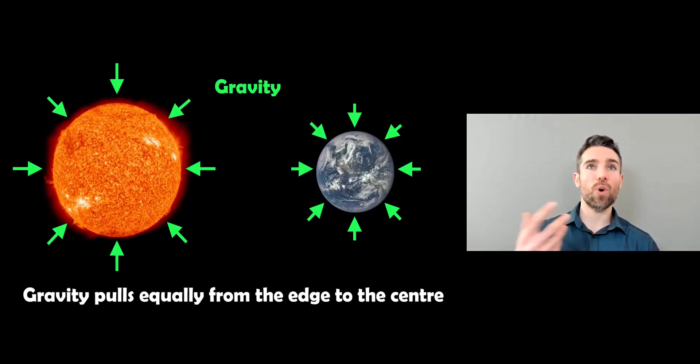Well once they get to a certain size there's enough gravitational force there that can mold them into a spherical shape. So it's pulling equally from the edge to the center and it creates this kind of equal or symmetrical shape of a sphere because it's all pulling down equally. It overcomes the internal strength of whatever it's made from and it only happens when it gets to a certain size.